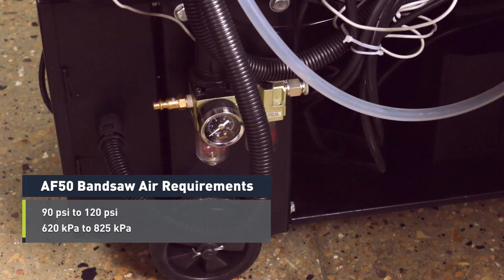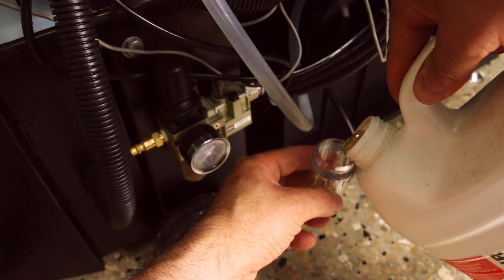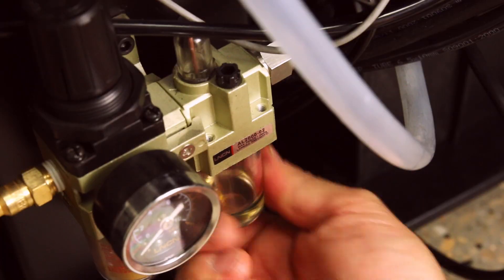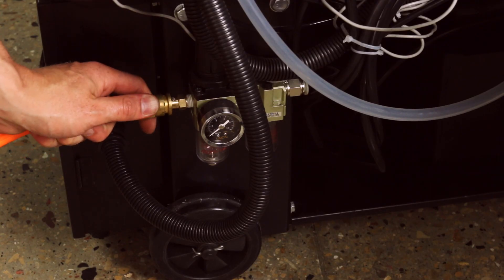Your site's air pressure needs to be between 90 and 120 psi. Tormach recommends using a compressed air dryer, desiccator, or filter between the air compressor and the machine. The AF-50 bandsaw is provided with a filter regulator lubricator. You must also lubricate the air with air tool oil. Connect your site's air line to the input port on the FRL.